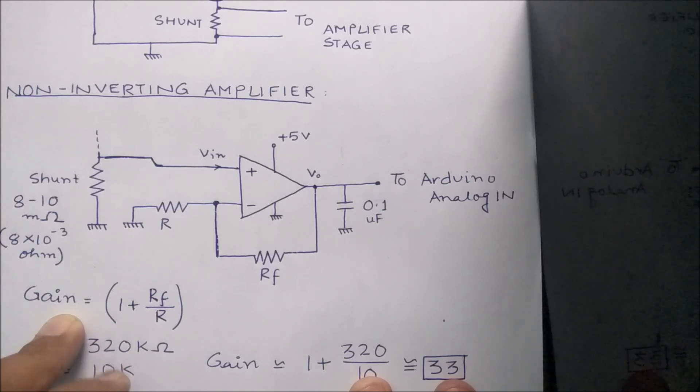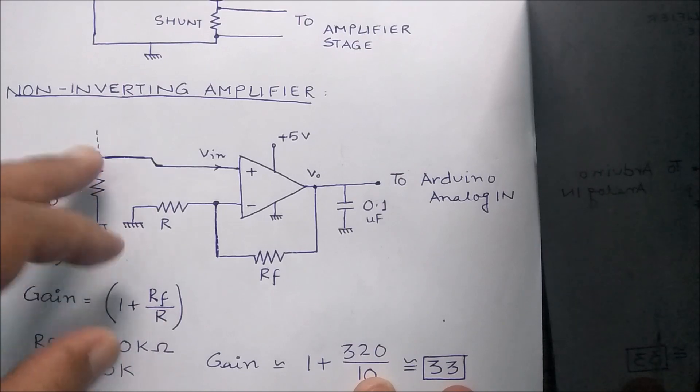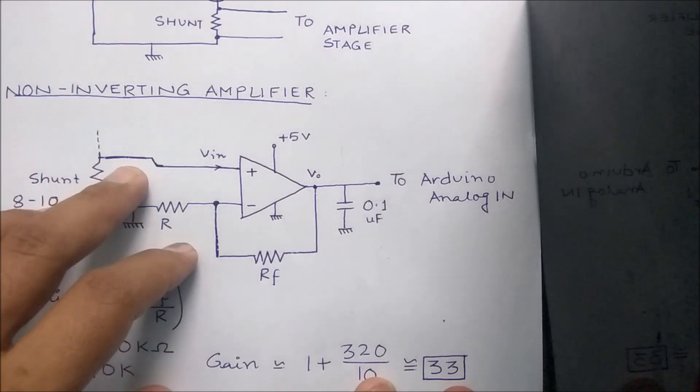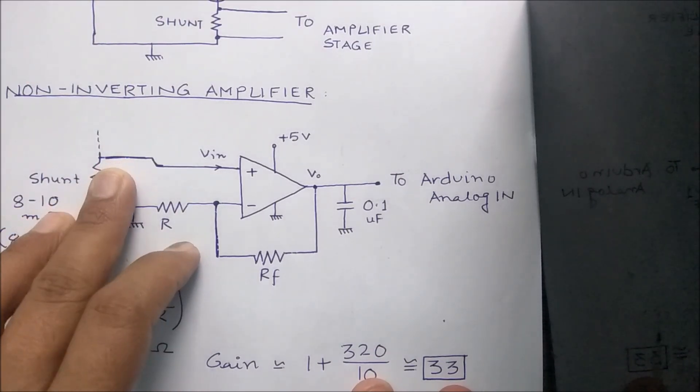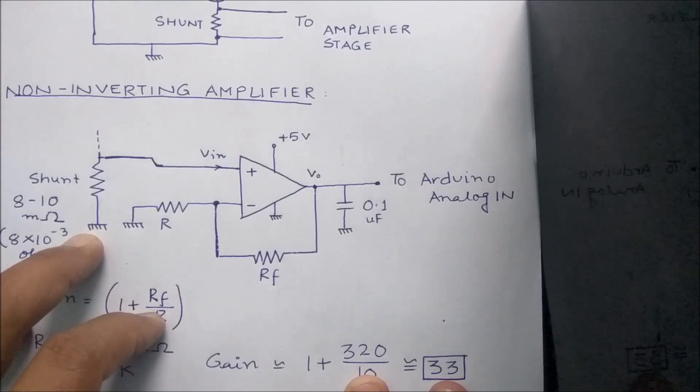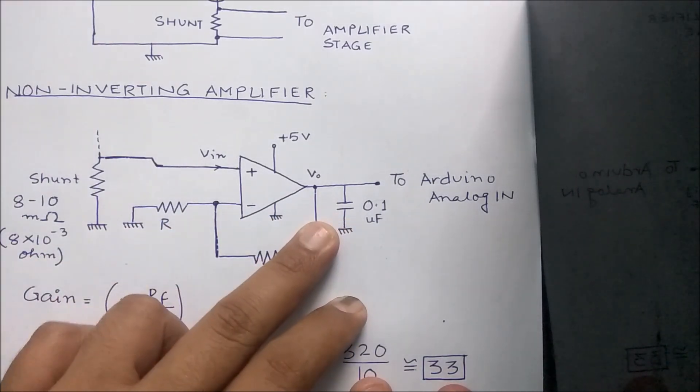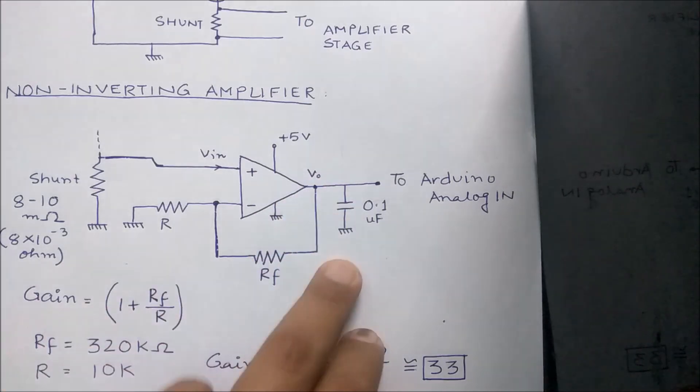My values are I've taken the values of around 320 kilohms for the feedback and 10 kilohms for the input resistance, giving me a total gain of around 33. As you can see, typical shunt resistances have the range of around 8 to 10 milliohms.